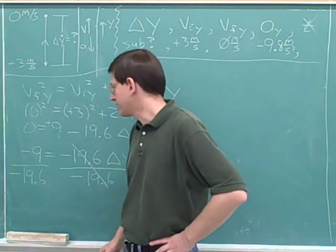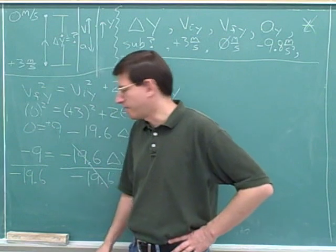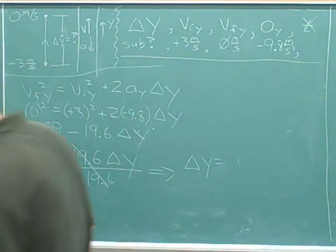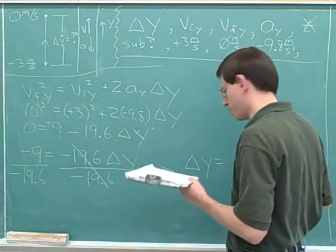So now we can use our calculator to calculate negative 9 divided by negative 19.6, and that turns out to be 4.6.